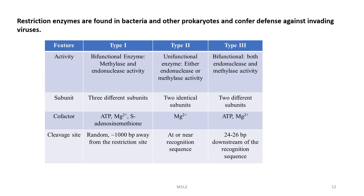Restriction enzymes are found in bacteria and other prokaryotes and confer defense against invading viruses. There are several types — type 1, 2, and 3 — with different structures. Type 1 has 3 different subunits, type 2 has 2 identical subunits, and type 3 has 2 different subunits. They require certain cofactors: type 1 requires ATP, Mg2+, and S-adenosylmethionine; type 2 requires Mg2+; and type 3 requires ATP and Mg2+. The cleavage pattern is also different in all of these enzymes.